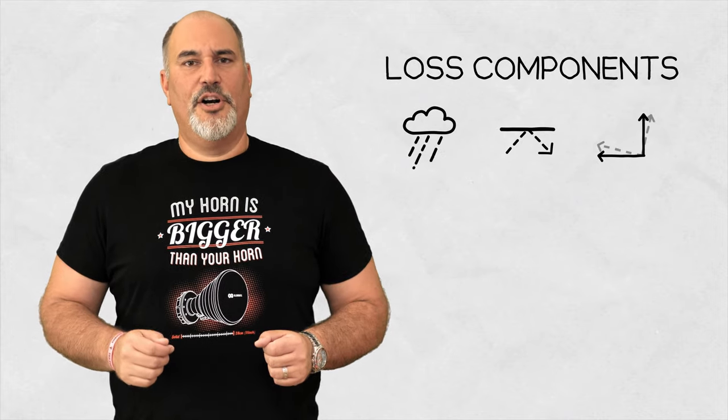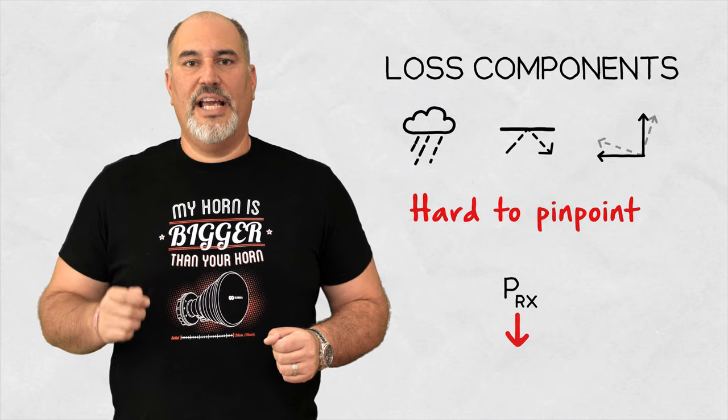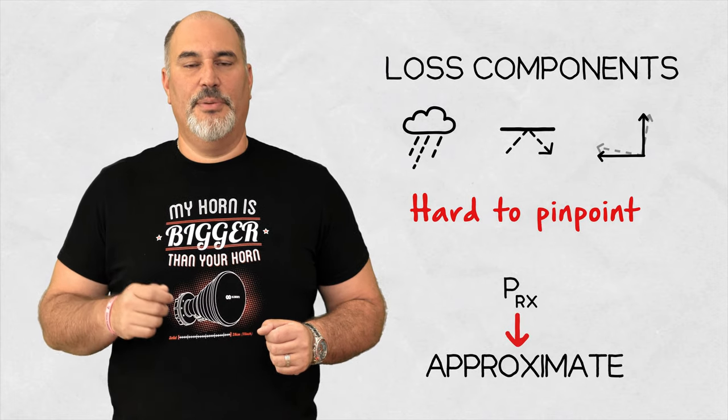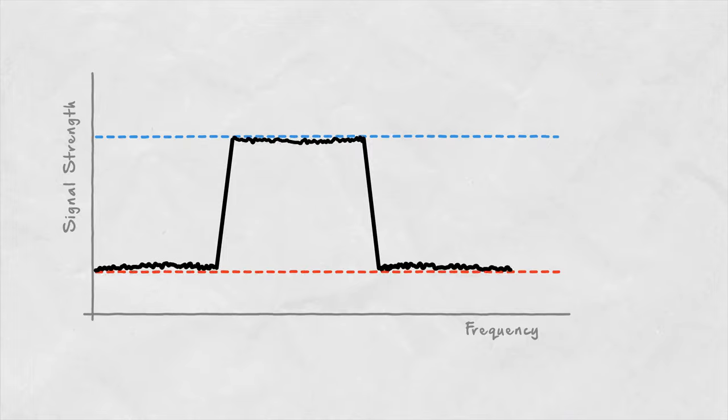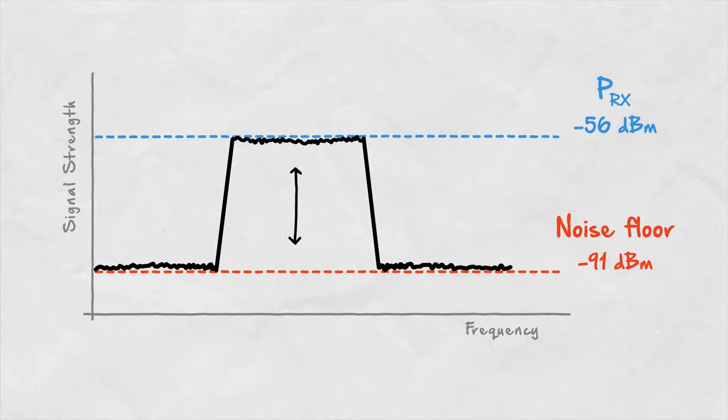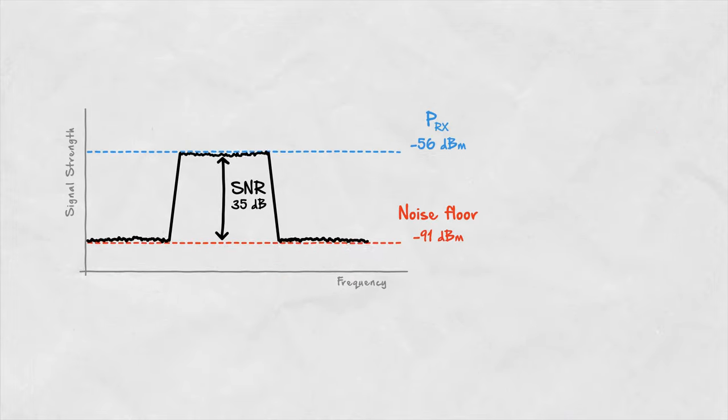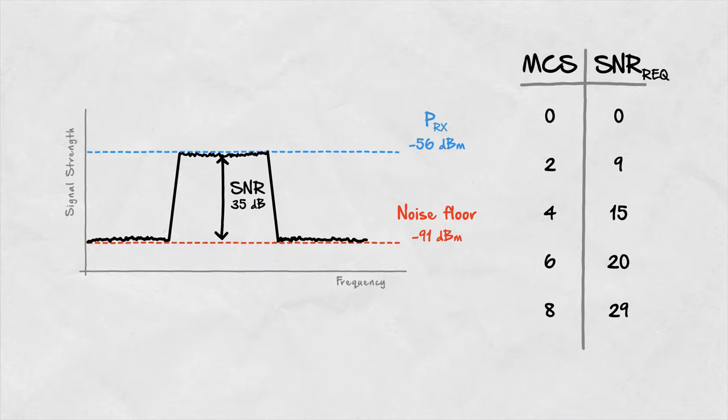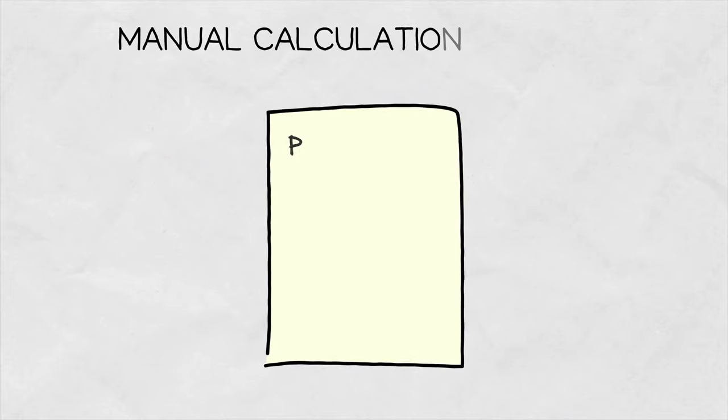These loss components can often be hard to pinpoint, which is why the link budget calculations are often approximate for typical WISP scenarios. Once you have the estimate of the received power, and you know the noise floor of the receiving radio, you can estimate the expected MCS rate by checking the datasheet of the radio you use.